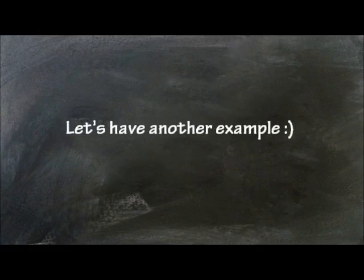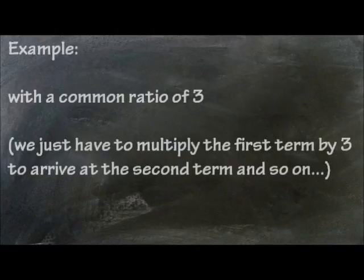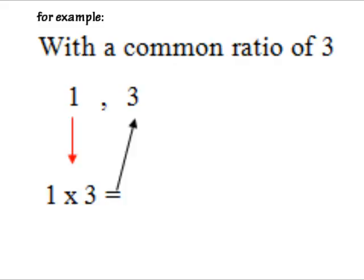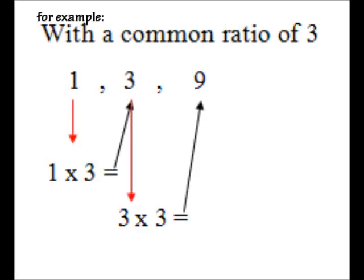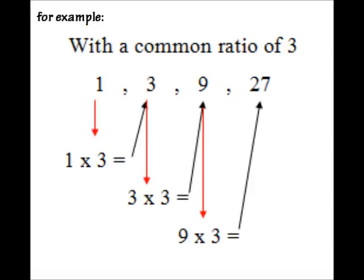Let's have another example. With a common ratio of 3, we just have to multiply the first term by 3 to arrive at the second term and so on. For instance, 1 times 3 equals 3, 3 times 3 equals 9, 9 times 3 equals 27, and so on. We get 3, 9, 27, and its pattern.